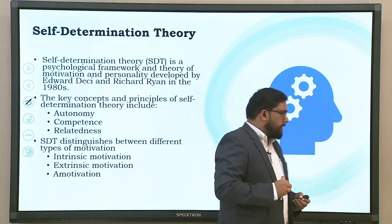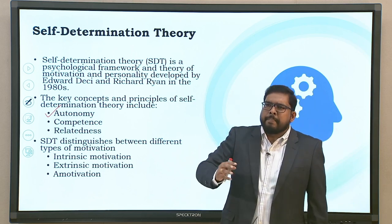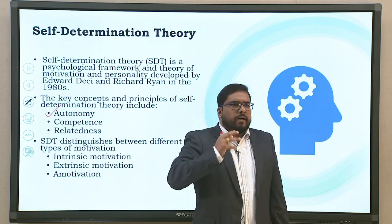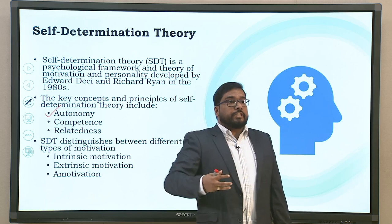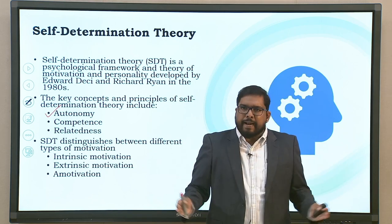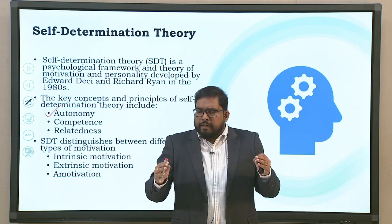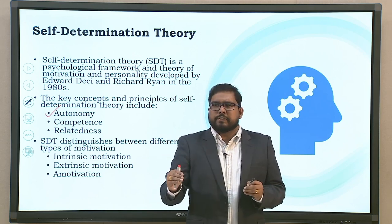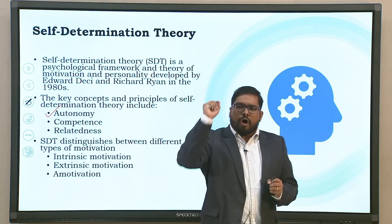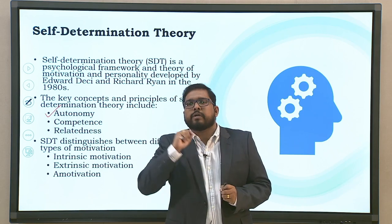Interestingly, there are three core elements which Deci and Ryan discuss in Self-Determination Theory. The first one is autonomy. Autonomy here specifically means the ability to make choices, the availability of those choices, the decision made to take a particular choice, and the owning of that decision. Autonomy is not simply freedom — the freedom comes with certain choices, you can make those choices, and the selection and decision of that choice is totally vested upon you. That is what autonomy specifies here.